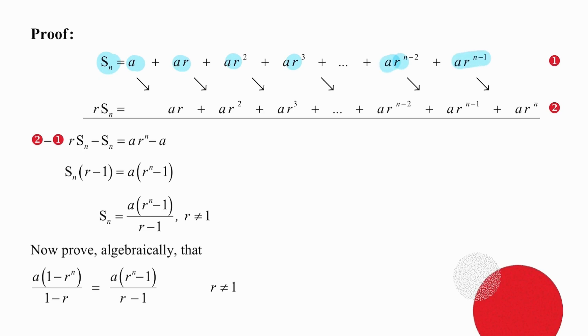You do that process again, which seems crazy, but you multiply each term by the ratio. So r times Sn. When you multiply a by r, you get ar. And then when you multiply the next term by r, you get ar squared. So everything shifts one over to the right. So the last term is below nothing, because you multiplied ar to the n minus 1 by r in order to get ar to the n.